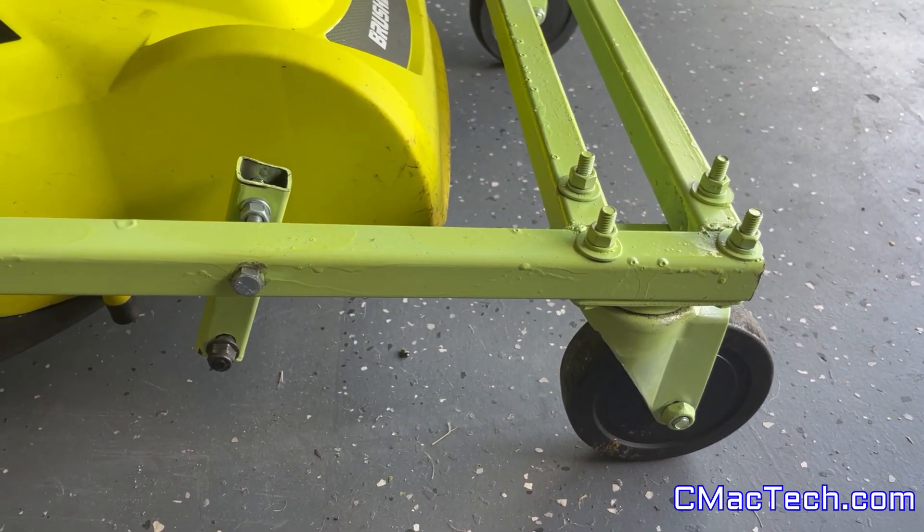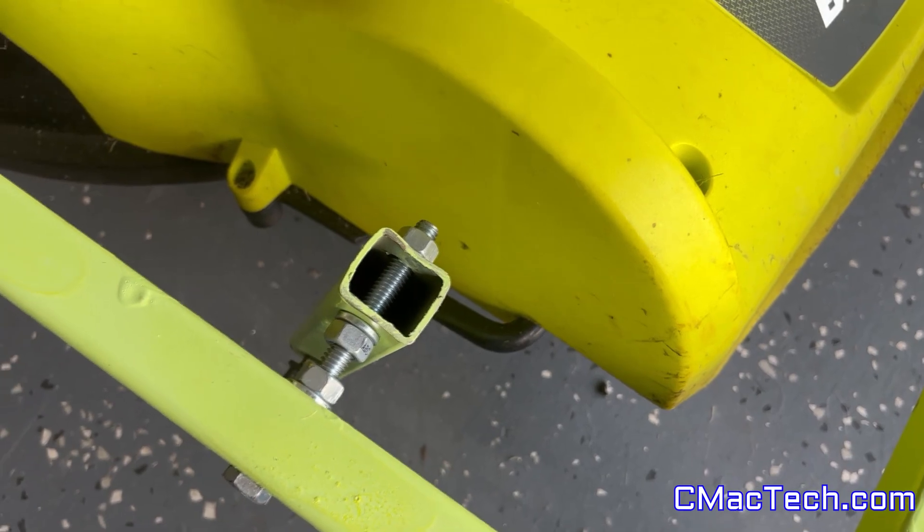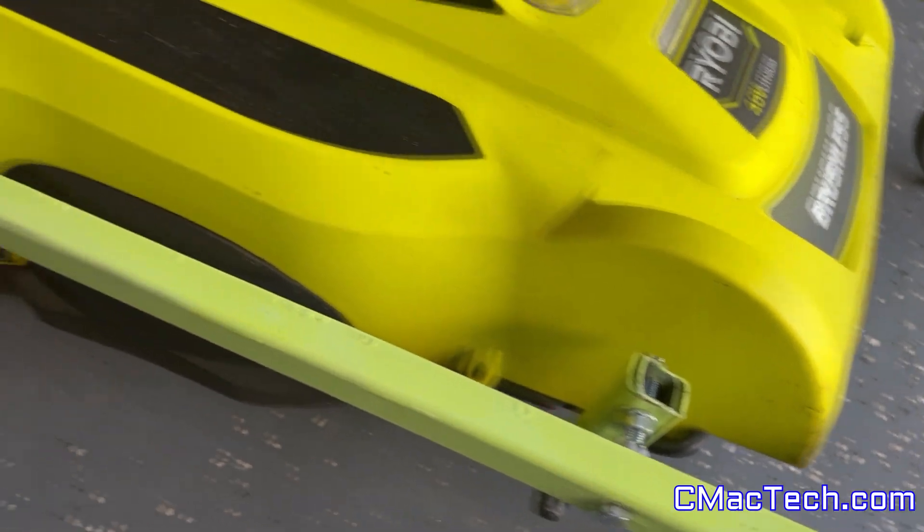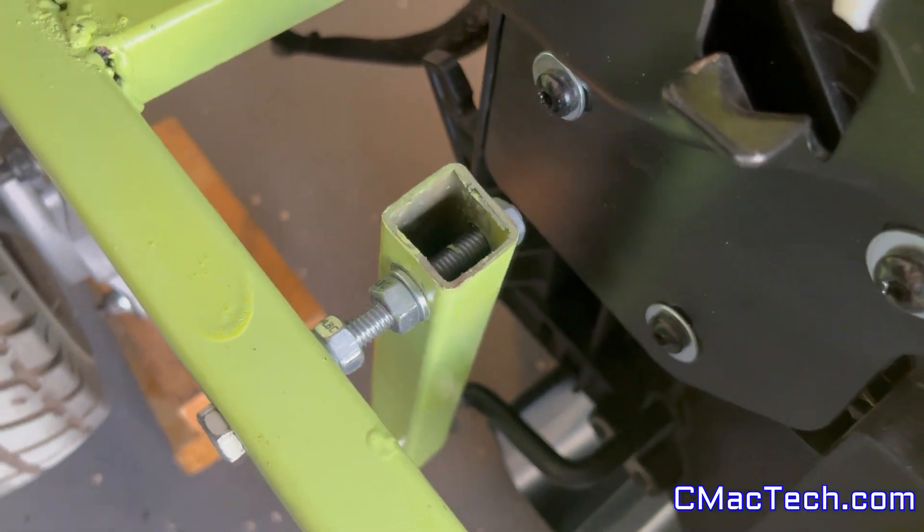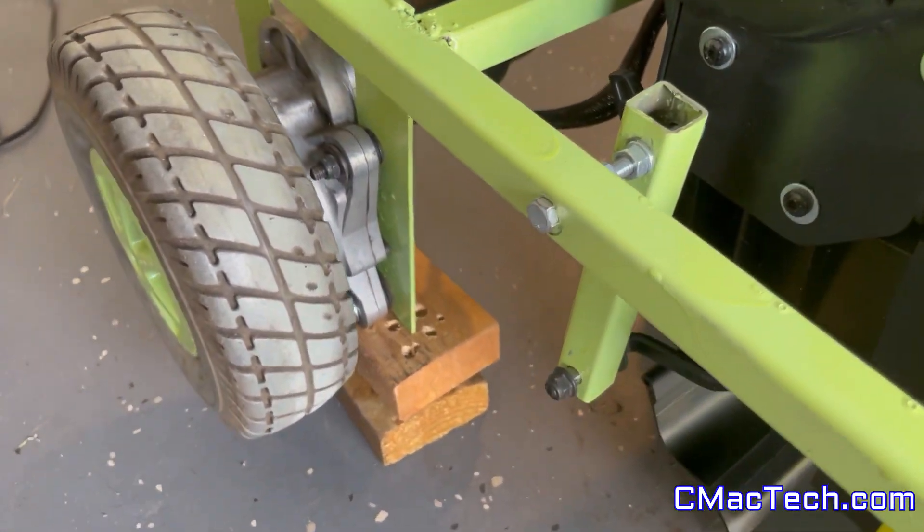You can see right here I bolted this square tubing, this metal tubing, to connect to the axles of where the wheels were. This makes the mower adjustable so you can adjust the mower to your liking, however low you want to cut the grass. So that is how I did that.